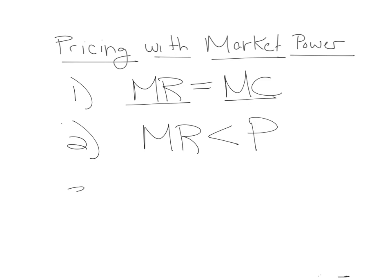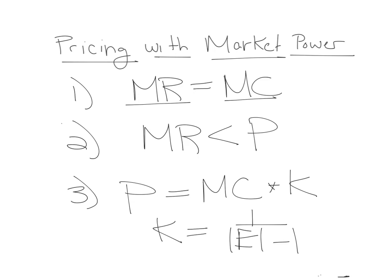And finally, we learned that the optimal price for the firm that maximizes profits is going to be equal to whatever it costs to produce the product times some markup, and more importantly, that markup is going to be a function of the price elasticity of demand of the good that the company sells.